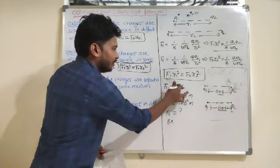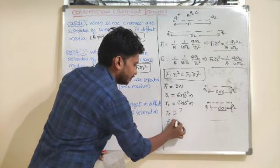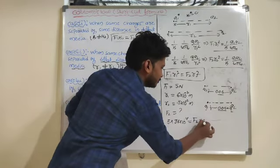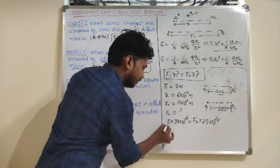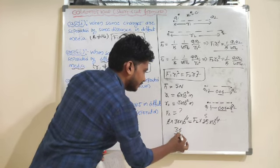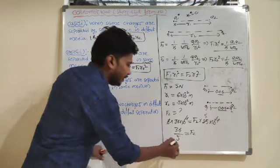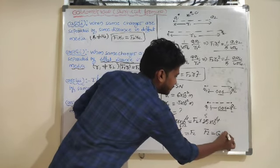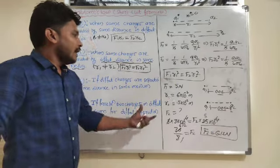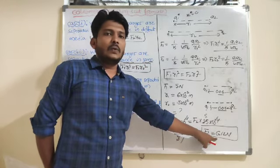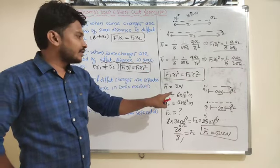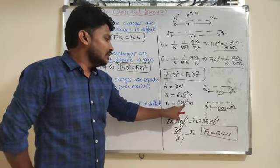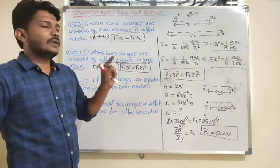F2 value is 36/5 = 6.12 Newton. As the distance decreases, the force value increases. From Coulomb's Law, force is inversely proportional to the square of the distance. When the distance was 0.06 m, force was 5 Newton; when decreased to 0.05 m, force becomes 6.12 Newton.